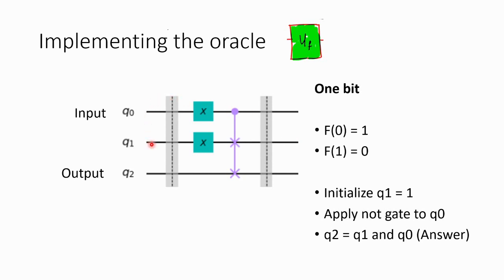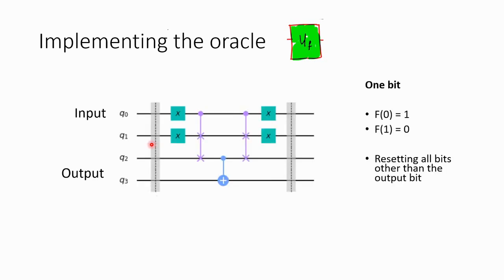We need to find a way to reset this — and it is a very easy way to do this. Almost all quantum gates are reversible. For instance, a NOT gate is the reverse of itself, so if you apply a NOT gate twice it nullifies the effect. The same with CSWAP — it is its own inverse. So if you apply it twice it nullifies the state.